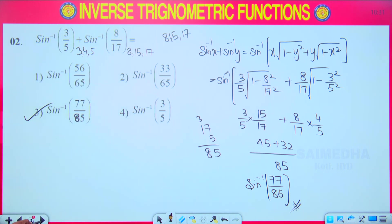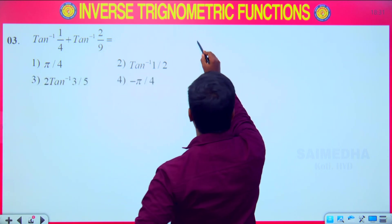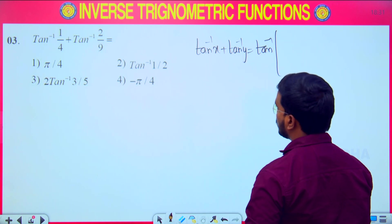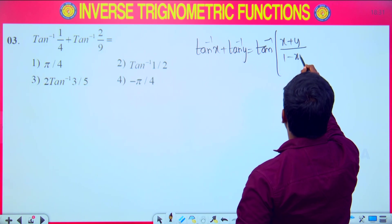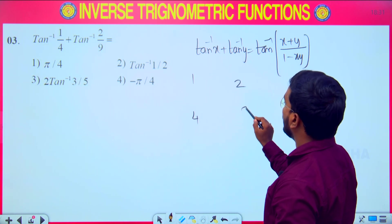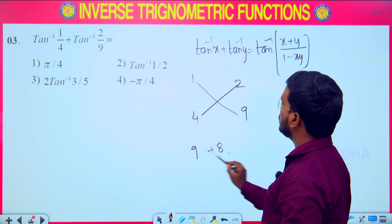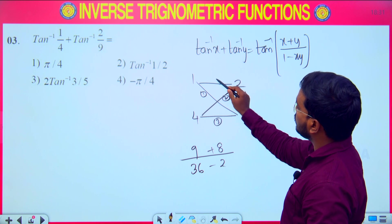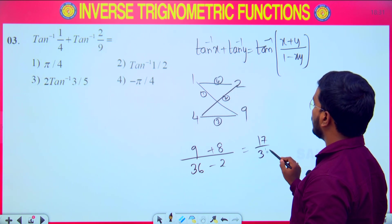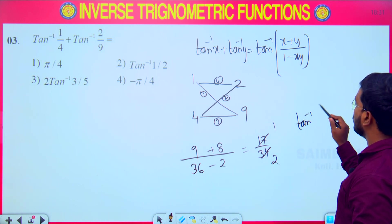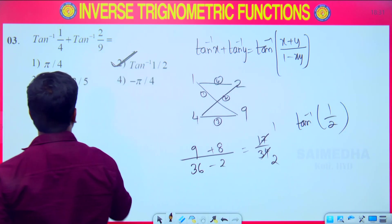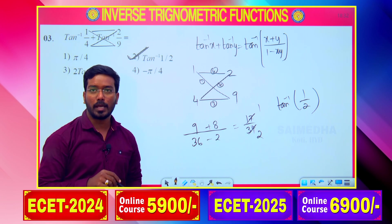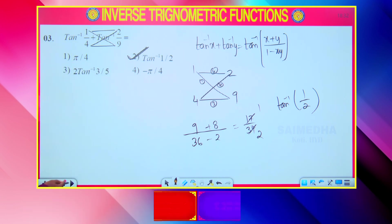Next question: tan⁻¹x + tan⁻¹y. This concept was discussed in the previous video. The formula is tan⁻¹x + tan⁻¹y = tan⁻¹((x+y)/(1−xy)). We use the cross method: multiply the terms, compute numerator as 9+8 = 17 and denominator as 36−2 = 34. So the answer is tan⁻¹(1/2). Pause the video and note it down.